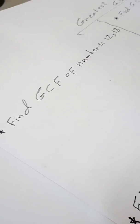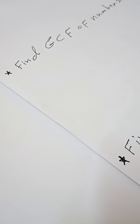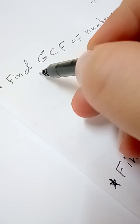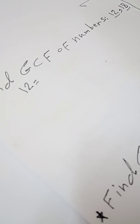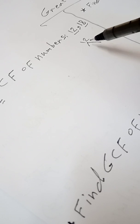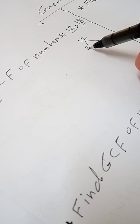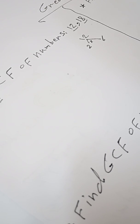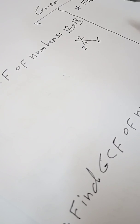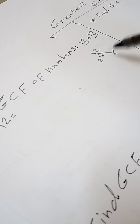Here is our first example: how to find the GCF of numbers 12 and 18. The first step — take 12 and find the prime factors. Ask yourself: what are two numbers whose product equals 12? For example, 2 times 6, or 3 times 4, or 1 times 12. We have many choices — no problem.